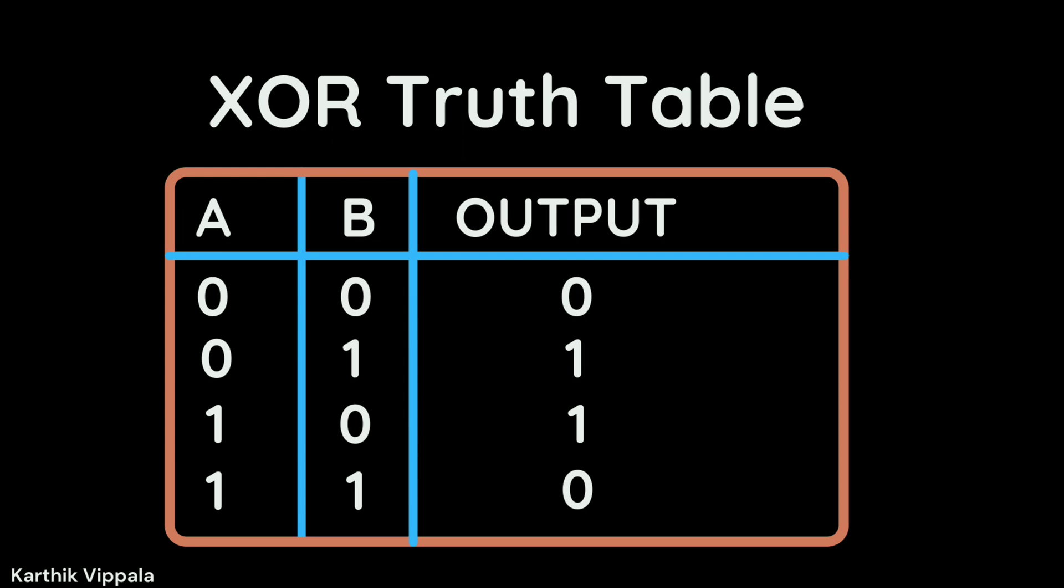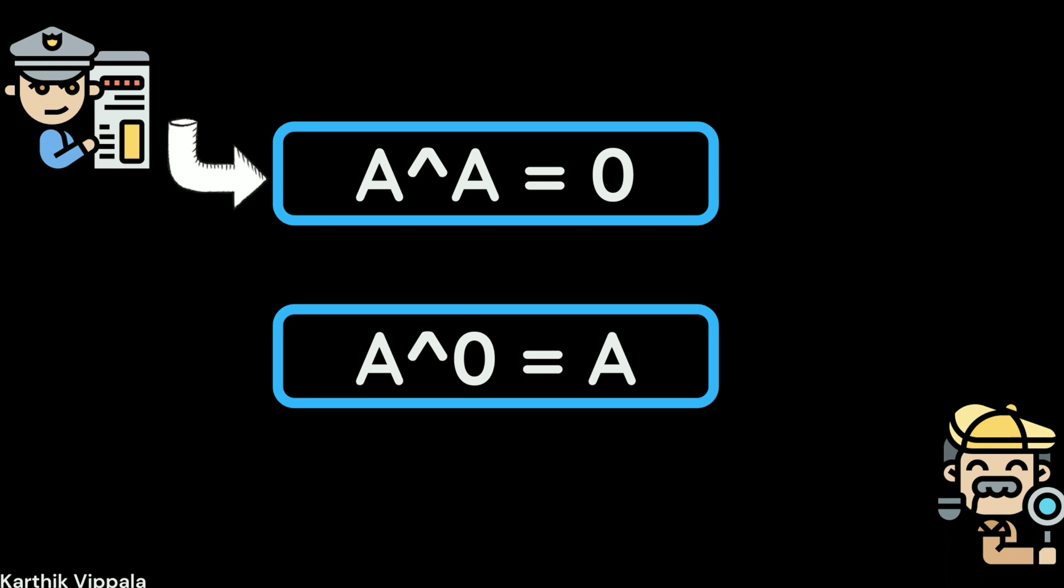If you observe this truth table clearly, we can get two points out of it. First, anything XOR itself is always 0, so A XOR A is always 0. The next thing is anything XOR with 0 is itself, that is A XOR 0 equals A. By using these two observations, we're gonna swap the data of A and B registers.